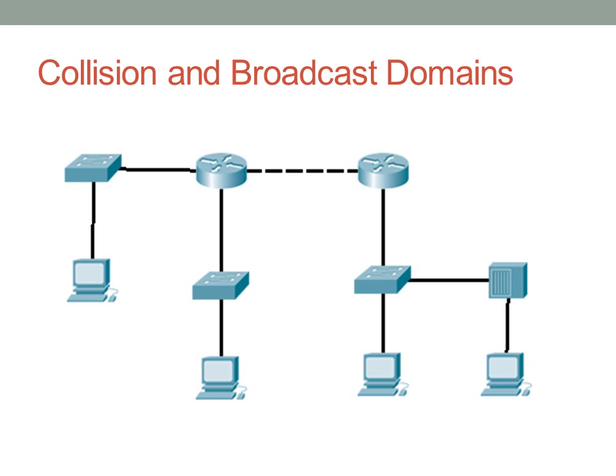Moving to the switch below the right router, that switch is connected to three different things, so we have three more collision domains. Now, what about that hub on the far right? The hub basically joins those Ethernet wires into what can be considered a single wire — they all share the same voltage. If that computer raises the voltage on one wire, the voltage is raised on all wires. So everything connected to that hub counts as just one collision domain. We end up with a total of seven collision domains.